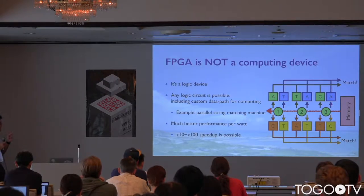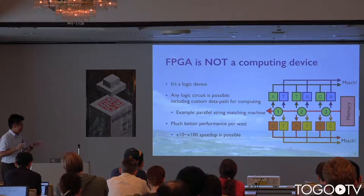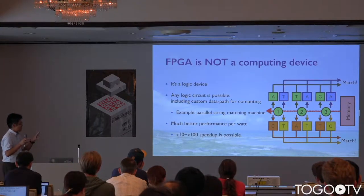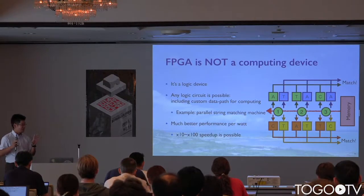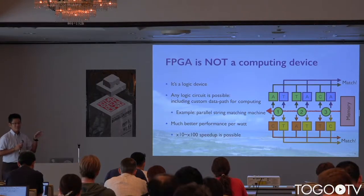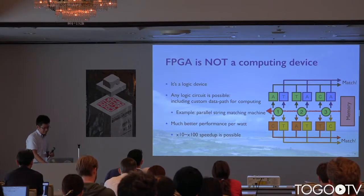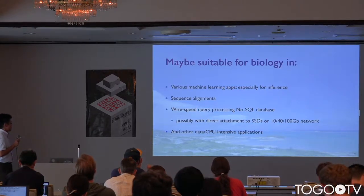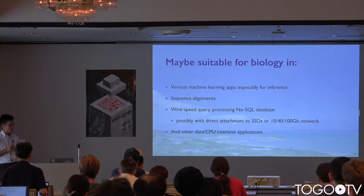Because FPGAs are not conventional computing devices, we have to implement our own custom computing data paths for our application. This figure shows an example of a custom string matching machine. These string matching machines can be implemented in parallel and read from memory or network at wire speed. The throughput can be 10 to 100 times higher compared to CPUs, making it suitable for BLAS in machine learning applications, sequence alignments, or wire-speed query processing for NoSQL-type databases.